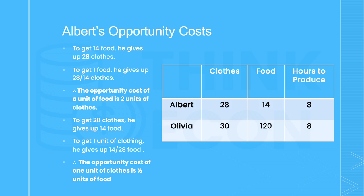On the other hand, to get 28 units of clothes, he must give up 14 units of food. Therefore, dividing both sides by 28, I know that to get one unit of clothes, he must give up 14 over 28, or one half units of food. You may notice that the opportunity costs are actually reciprocals of one another, and this will always be true. So once you calculate the opportunity cost in terms of one good, all you have to do is switch the numerator and the denominator to find the opportunity cost of the other.